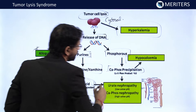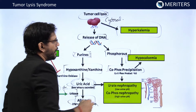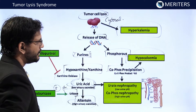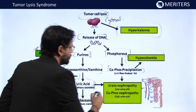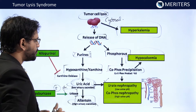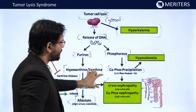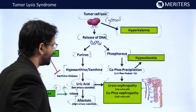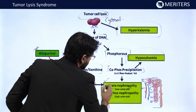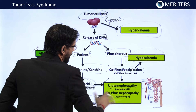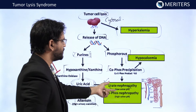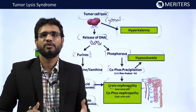Due to hyperphosphatemia, there is increased excretion of calcium from the kidney. Calcium-phosphate precipitation occurs, leading to hypocalcemia as more calcium is removed from the body. This can lead to urate nephropathy due to uric acid. Importantly, urate nephropathy is caused by uric acid and shows low urine pH, while calcium phosphate nephropathy is caused by calcium-phosphate precipitation and shows high urine pH.